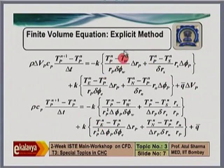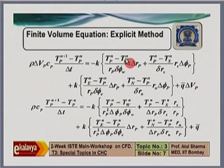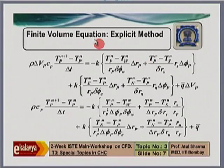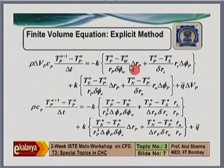Substituting the discrete form of Fourier's law of heat conduction in the cylindrical coordinate system, we obtain a linear algebraic equation. The total heat gain by conduction is calculated with temperature from the previous time level, indicated by superscript n — so this is an explicit method. This is the finite volume equation using the explicit method in cylindrical polar coordinates.